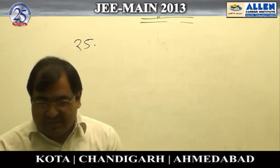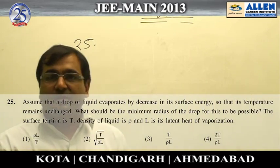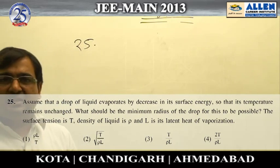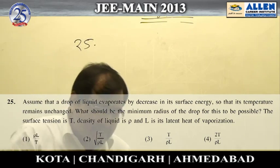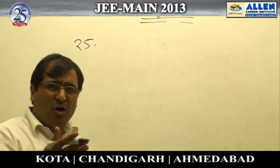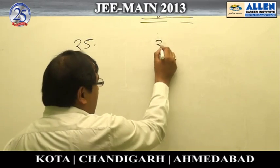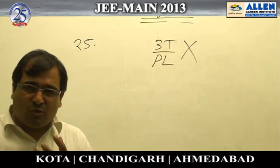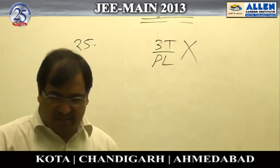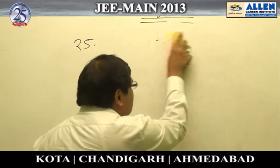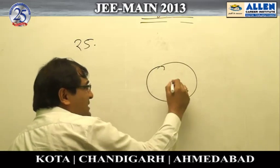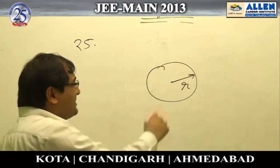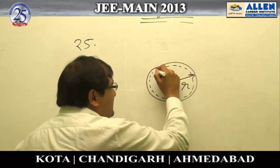Question number 25 is the best question of this paper. It is on surface tension and asks about evaporation energy — the energy for evaporation coming from surface energy. If you go by normal means, your answer may come out to be 3T/ρL, which is not any of the options. Simply taking the volume and total surface energy gives a wrong answer that matches none of the four options.